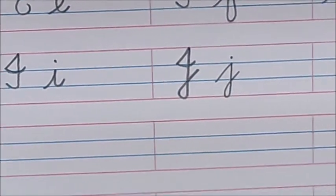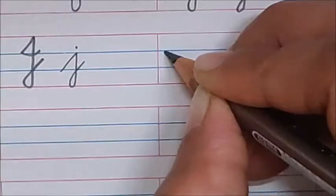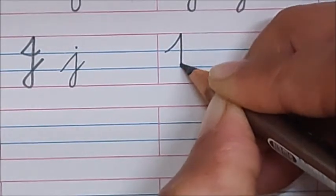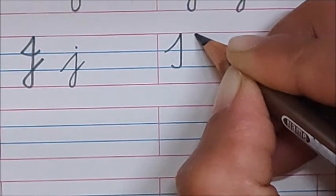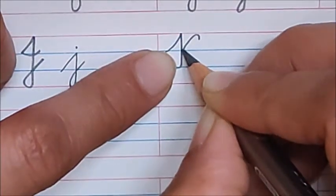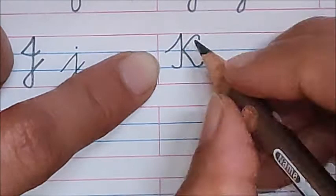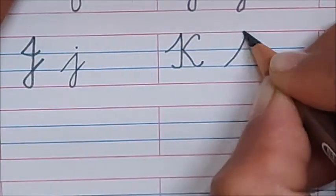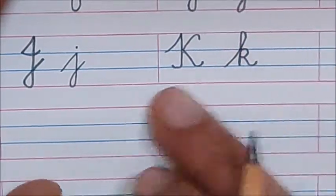Now, what comes after J? K. How to write K? Slanting line. Standing line. Turn. Now, from here, you have to go and touch the center of the standing line. Now, kick. Kick. And, again, make a tail. K. Write down here, lowercase K in cursive.